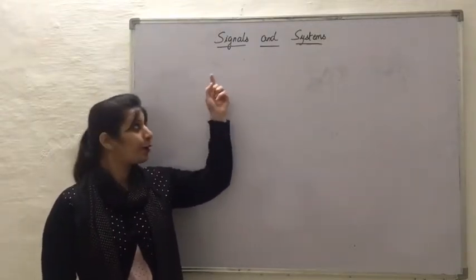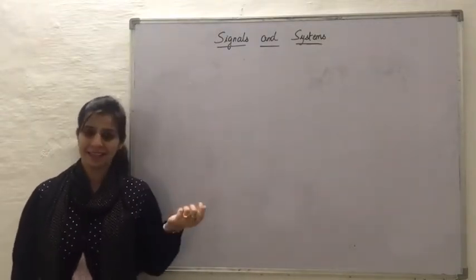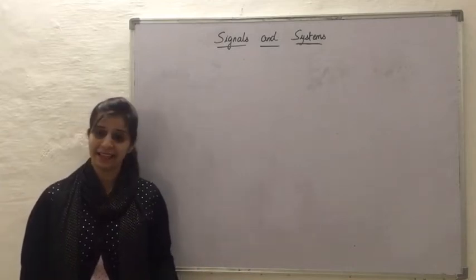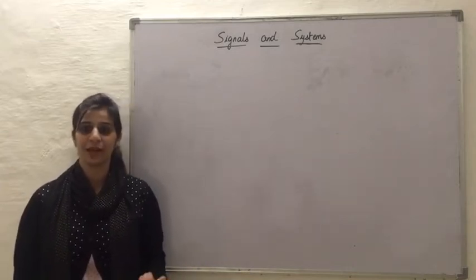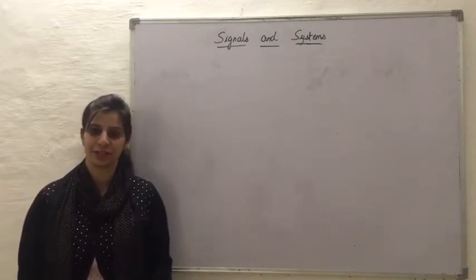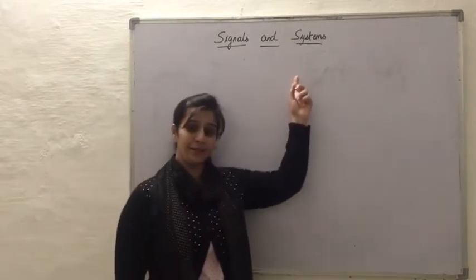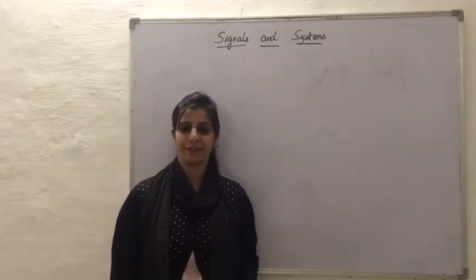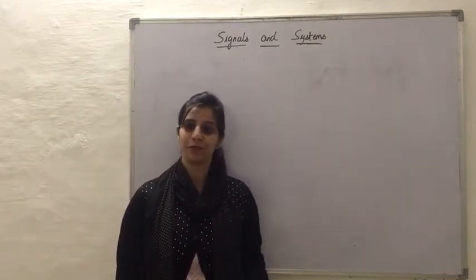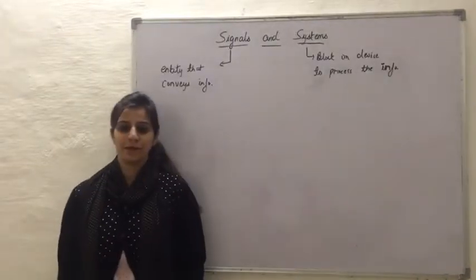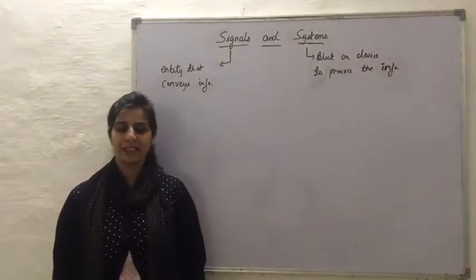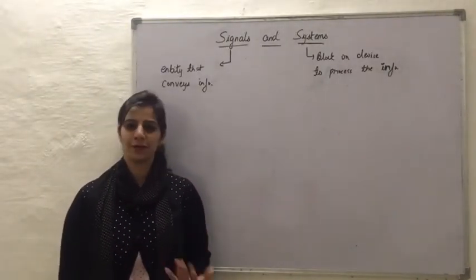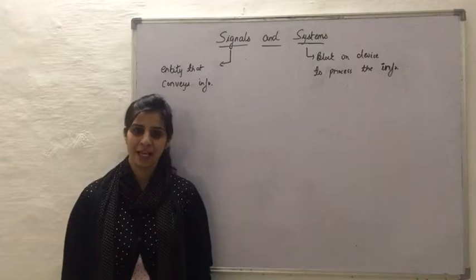When we talk about a signal, a signal is defined as any entity that would convey some information. A system is defined as a block or a device that would process that information. Signals are always better understood with examples, so I will start by giving you some examples of signals.